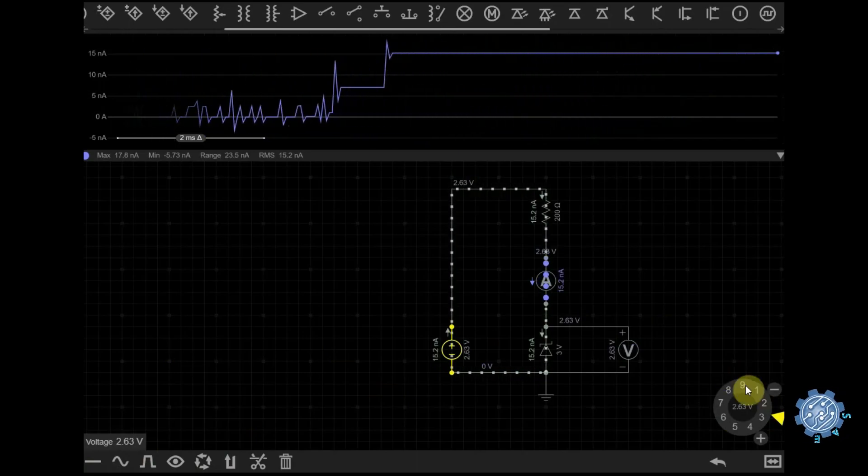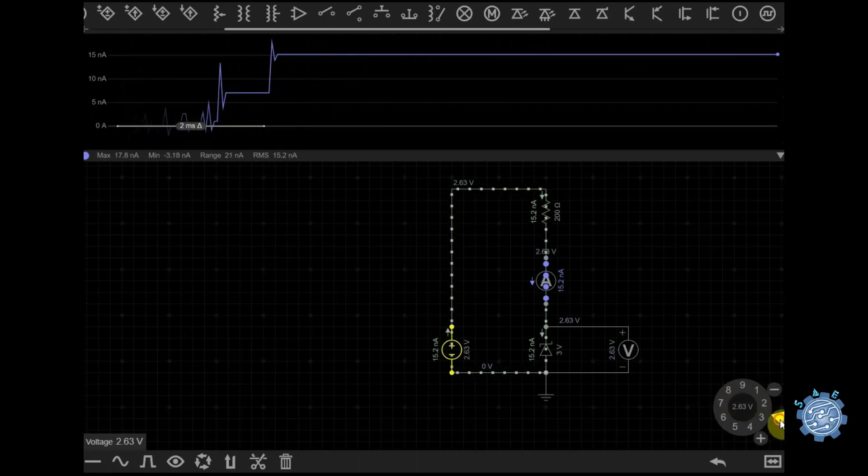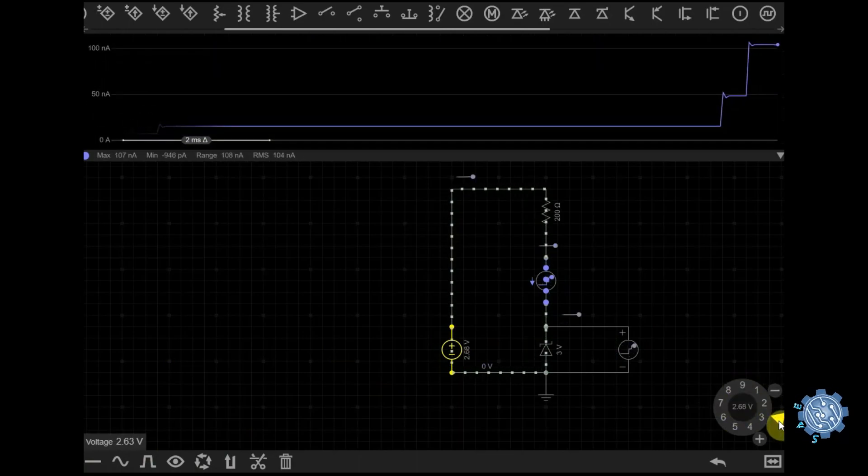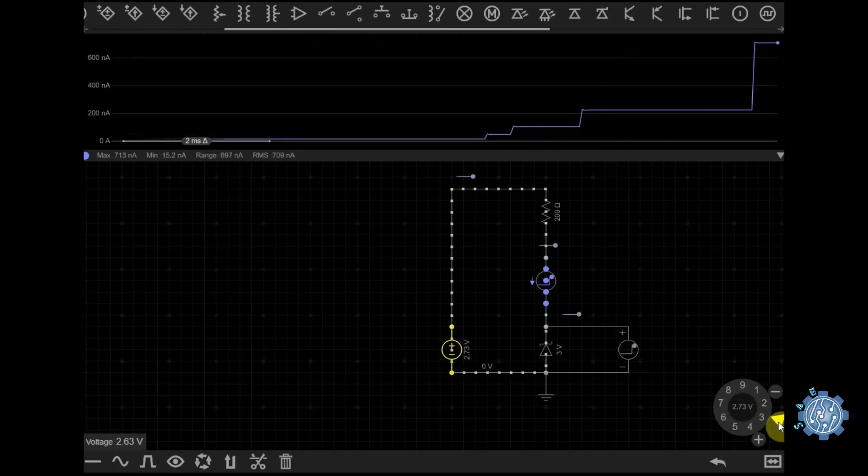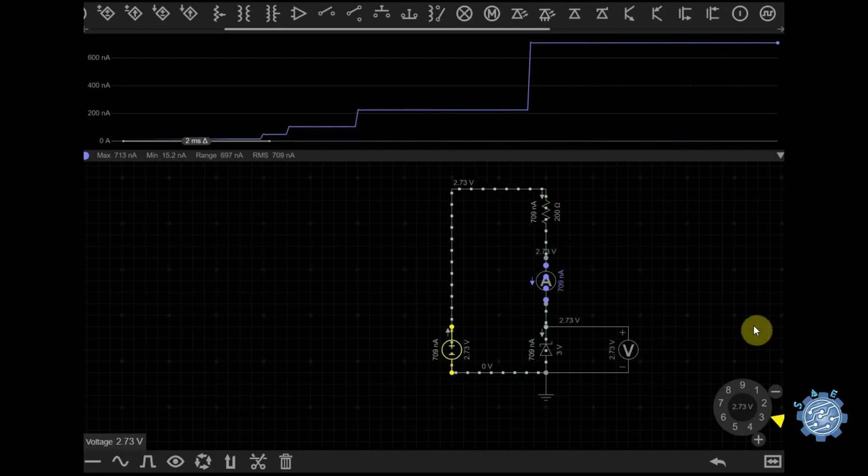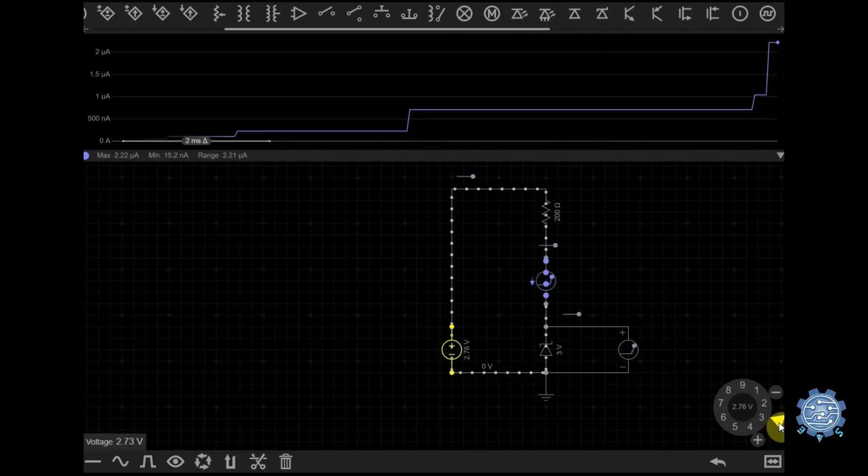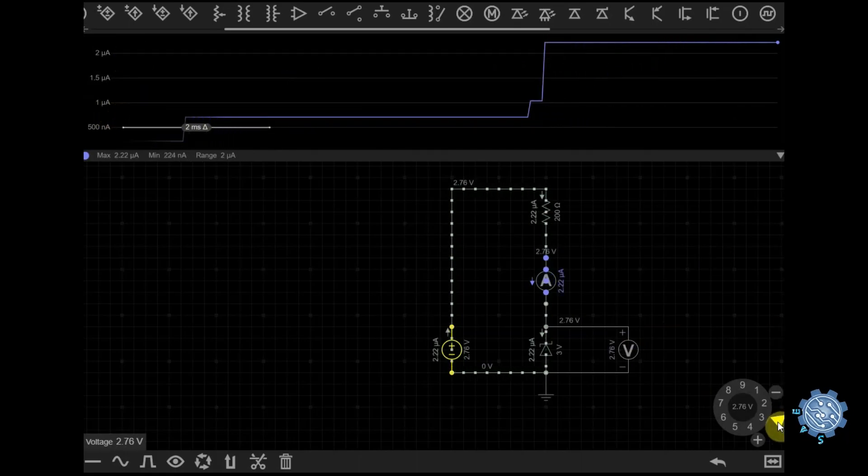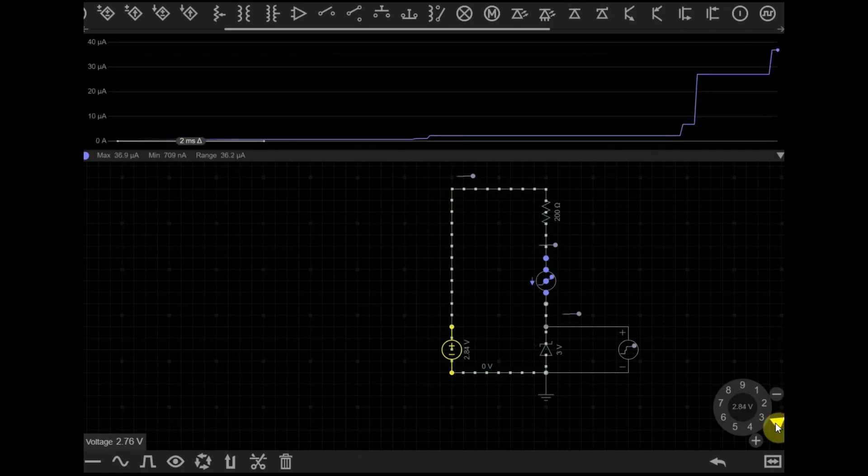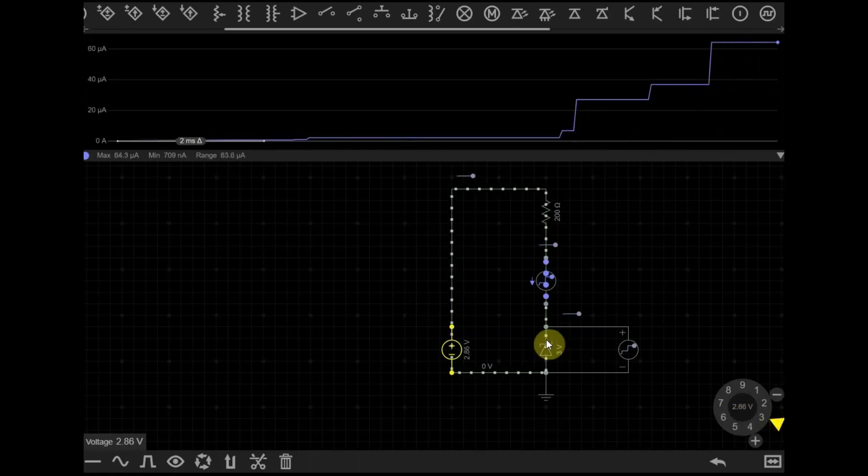Battery life can also be affected by this. In battery powered applications, the reverse leakage current of the Zener diode can contribute to the overall power consumption of the circuit and reduce the battery life. Choosing a Zener diode with a low reverse leakage current can help to minimize power consumption and extend battery life.